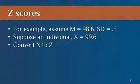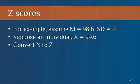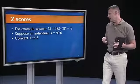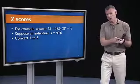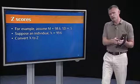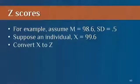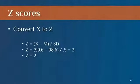So just to be clear, let's assume we have a normal distribution of healthy individuals where the mean body temperature is 98.6 degrees Fahrenheit, and the standard deviation is about a half a degree, so 0.5. Suppose I pick one individual from that distribution at random, and that individual's body temperature is 99.6 degrees. Now I want to convert that raw score, that X, 99.6, to a Z score. Well, all I have to do is apply this Z formula.